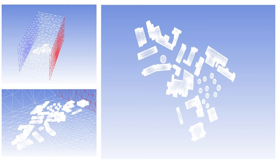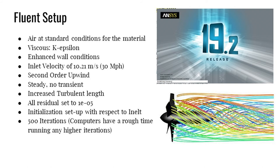After the mesh was done, we moved to the CFD setup in ANSYS. An issue we ran into was that it was hard to see the mesh in Fluent, so we had to view it through the Fluent software. The characteristics we programmed in Fluent included K-Epsilon turbulence model, air at standard conditions, an inlet velocity of 10 meters per second — which is close to 30 miles per hour, the average wind speed of a cold front — second order upwind, steady (not transient). We also increased the turbulent length, and all residuals were set to 1×10⁻⁵.